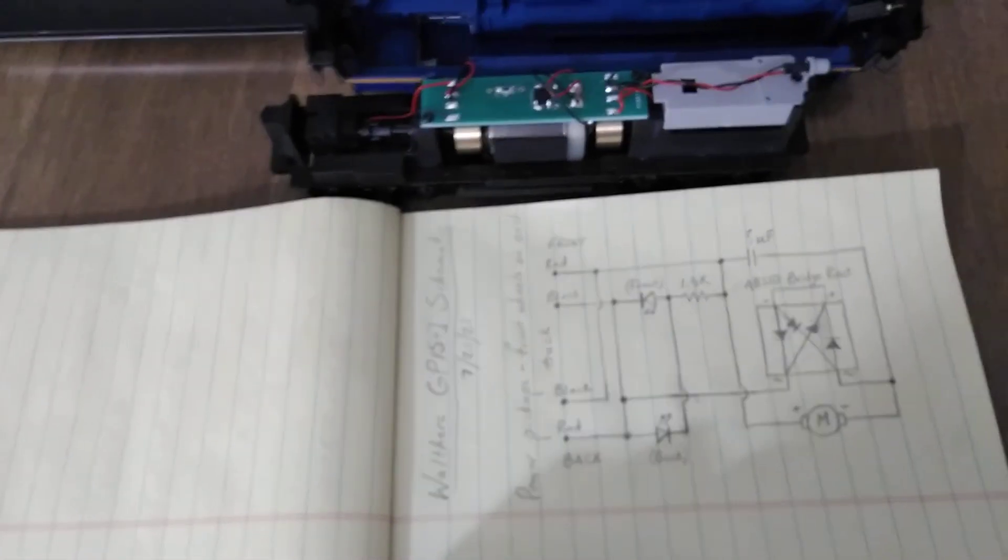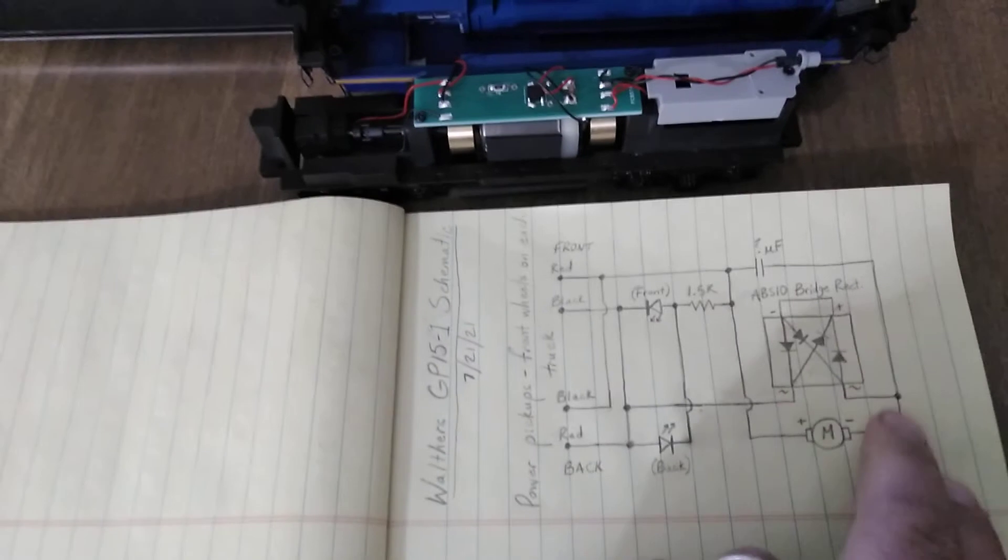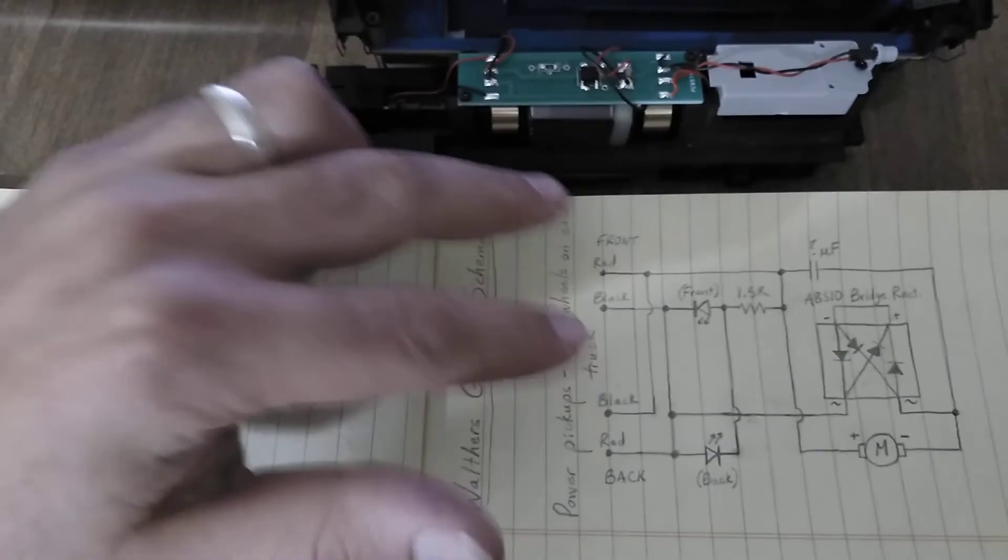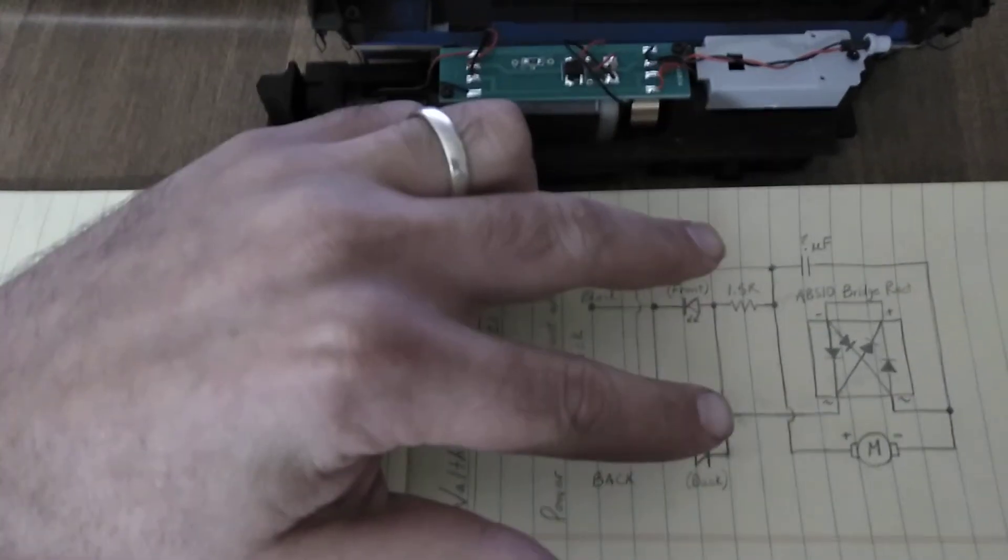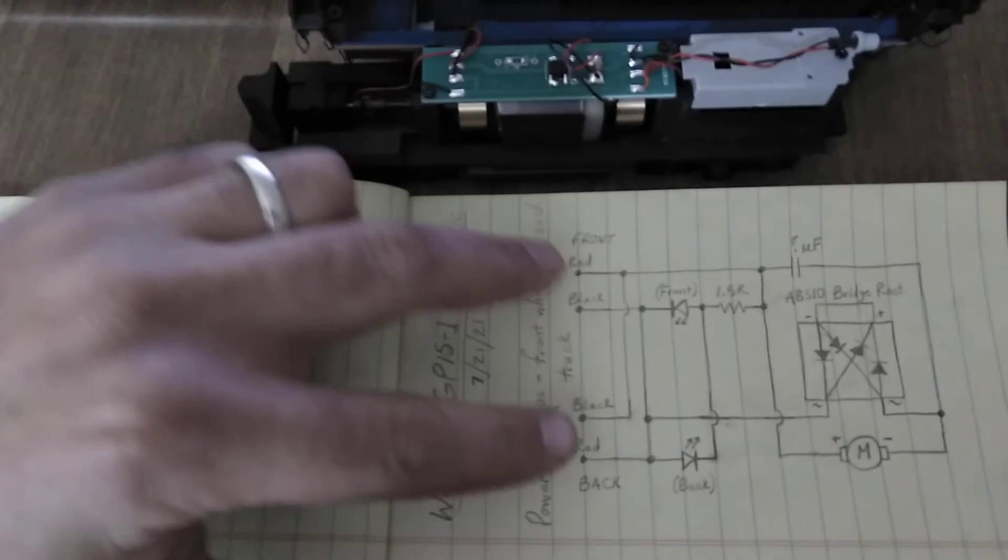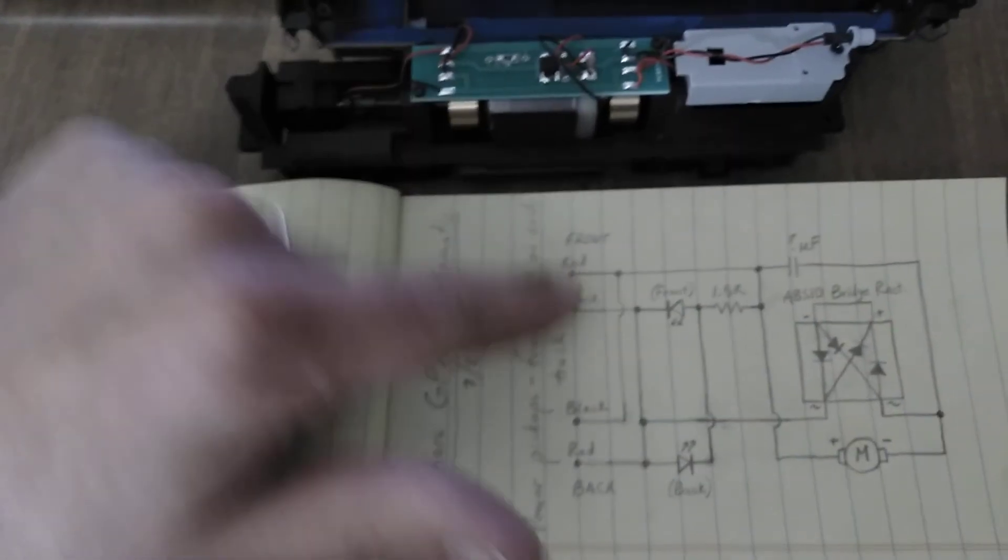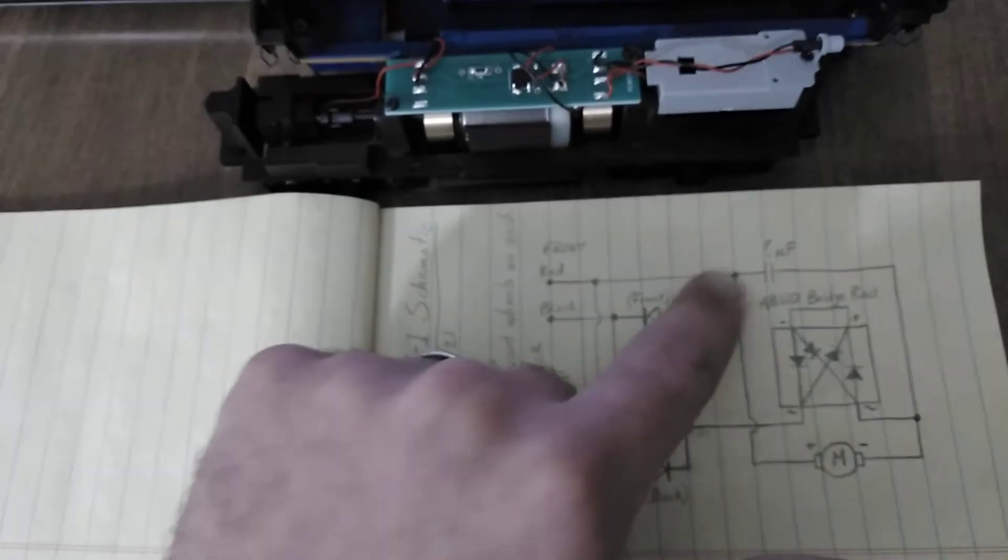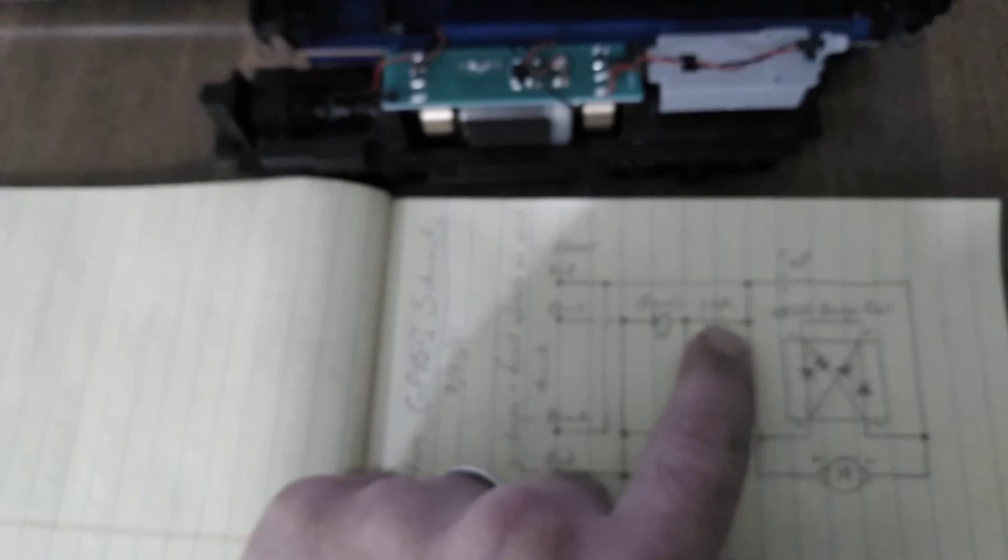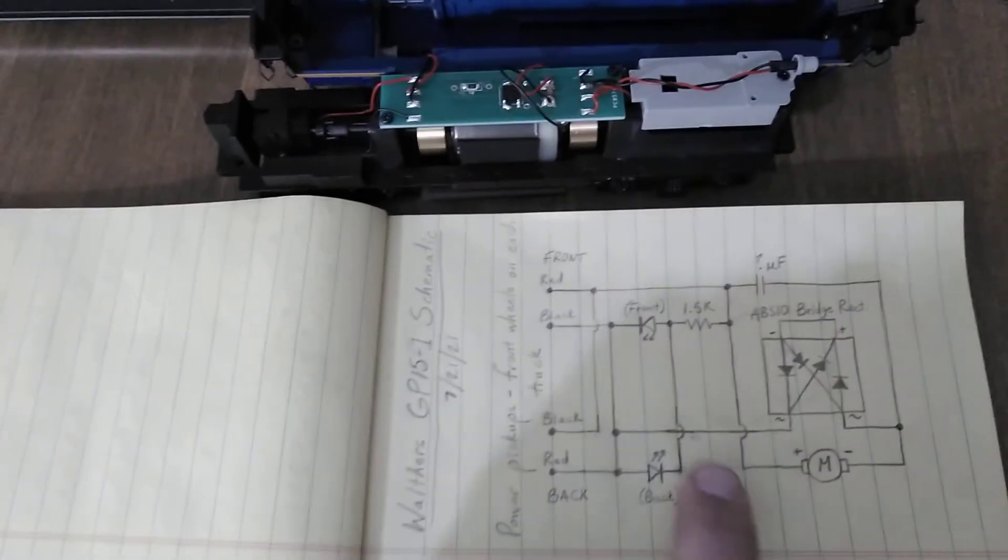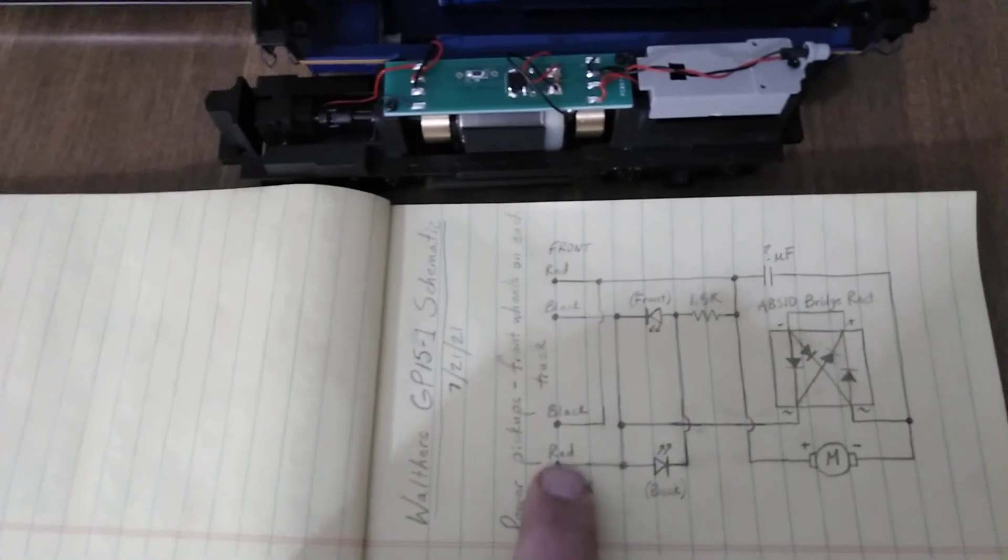So I'll explain what's going on there. Now say we want to go forward with the locomotive. What's going to happen here is current will flow down this way and then back this way to the other rail. So the current will flow this way, it'll flow down here through this trace, and then it'll flow through the current limiting resistor, through the front LED, and then back through the other pickup to the other rail.